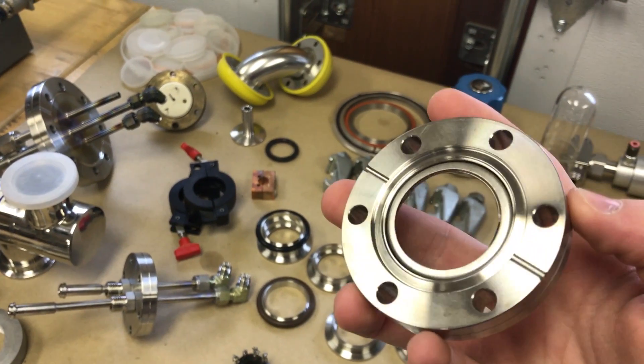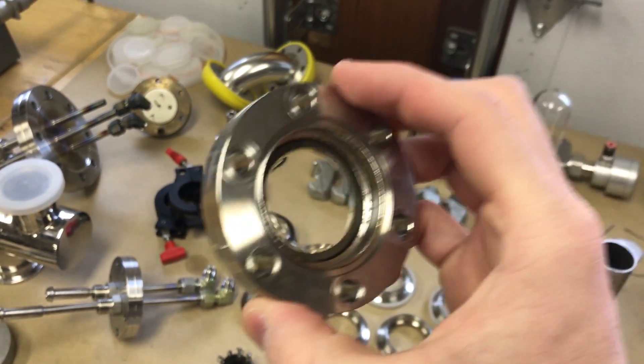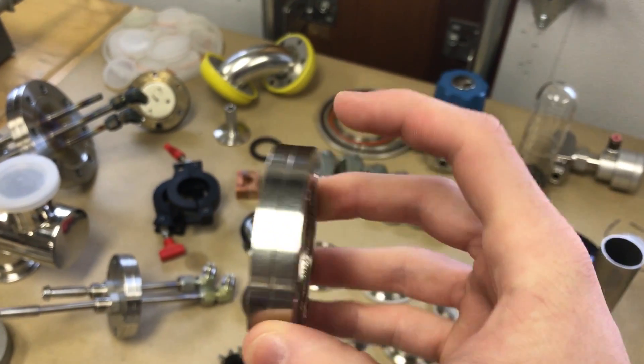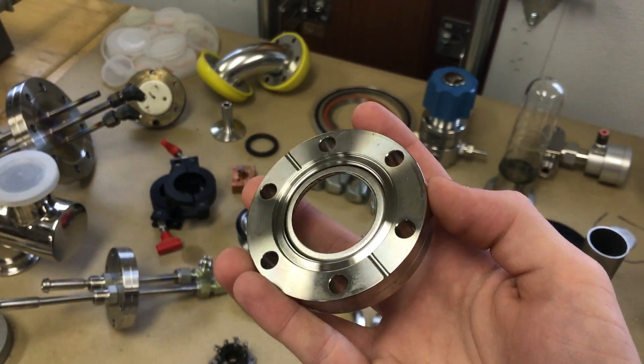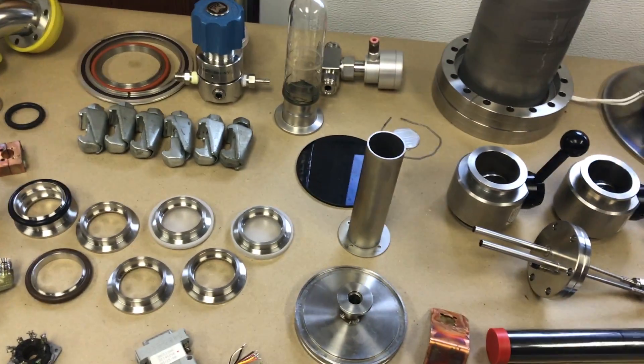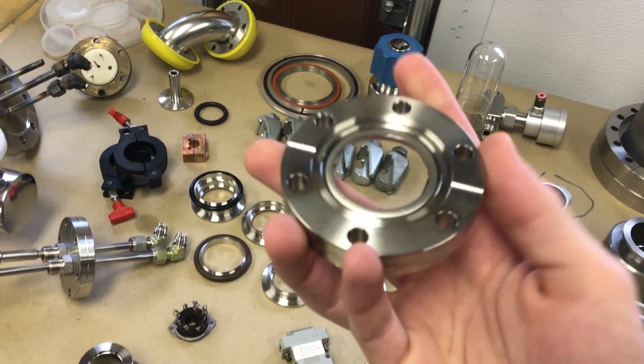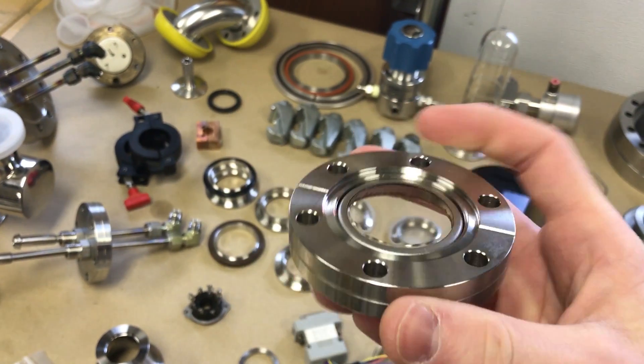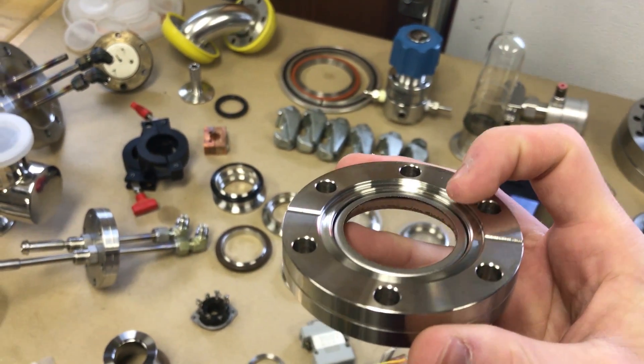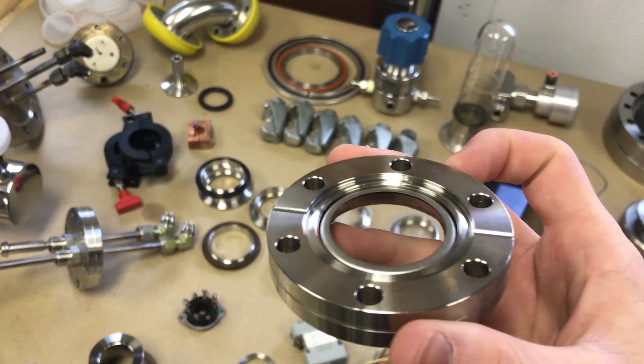So you put this on it just so you can see through it into the chamber. But all of this stuff is quite dirty so I'm going to be cleaning it before I use it anyway. You'll notice the conflat on the inside here has a knife edge. And this is a genderless flange.